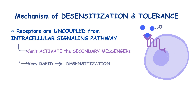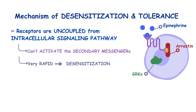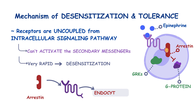When exposed to high doses of epinephrine, G-protein coupled receptors, or GPCRs, get phosphorylated by intracellular enzymes called G-protein coupled receptor kinases, or GRKs. The phosphoryl groups then get bound by bulky proteins called arrestins, which prevents the receptor from activating their neighboring guanine nucleotide binding proteins, or G-proteins. At the same time, arrestins tag the receptors for endocytosis, reducing the number of receptors on the cell membrane.